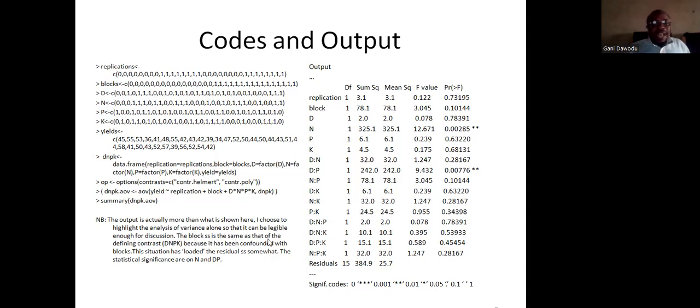The block sum of squares is the same as that of the defining contrast, DNPK, because it has been confounded with blocks. This situation has loaded the residual sum of squares somewhat. The statistical significance on N and P are noticed. You remember, in the hand calculation, we had 2 for degrees of freedom. And we had 123.1 instead of 78.1. I said instead of 78.1 because your experiment is confounded. The defining contrast is confounded with blocks.